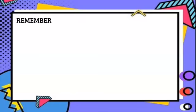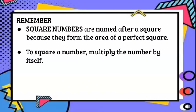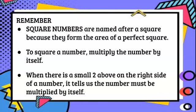So we need to remember: square numbers are named after a square because they form the area of a perfect square. To square a number, multiply the number by itself. And when there is a small 2 above on the right side of a number, it tells us the number must be multiplied by itself.